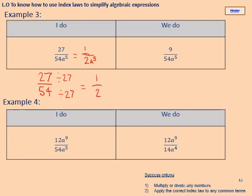For the 'We do' — 9 over 54a to the power 5: deal with the numbers first. The highest common factor of 9 and 54 is 9. So 9 ÷ 9 = 1, 54 ÷ 9 = 6, giving 1 over 6. The a to the power 5 is on the bottom with nothing on the top to cancel, so it stays. Answer: 1 over 6a to the power 5. Pause the video and copy this down if you haven't got it.